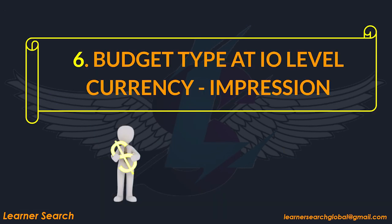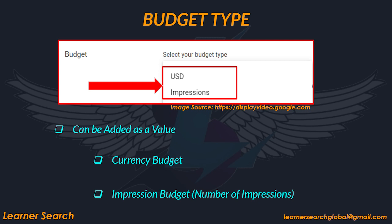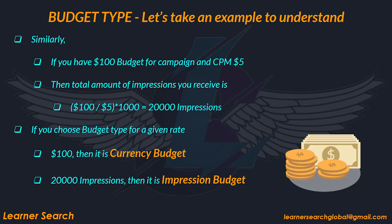Budget type at IO level. In DV360, budget type can be set at IO level and added as a value. You can set two types of budgets: currency budget type and impression budget type. Consider the following example: if you have $100 and the price of each apple is $5, the total number of apples you will buy is 100 divided by 5, which is 20 apples. If you spend $100 and receive a number of items, the budget type is currency budget. If you wish to buy 20 apples at $5 each, you will spend a final amount of $100 — in this case you are dealing with quantity.